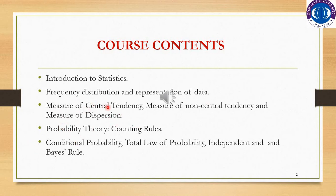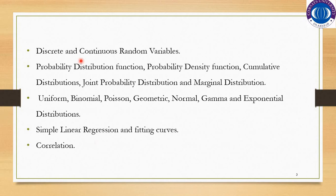We will study measures of dispersion — how much the data is dispersed around the mean. Then probability theory, which includes counting rules such as the multiplicative rule, permutation, and combination, as well as conditional probability, total law of probability, independent and dependent events, Bayes' rule, and discrete and continuous random variables, probability distribution functions, probability density functions, cumulative distributions, joint probability distribution, and marginal distribution.